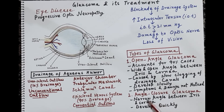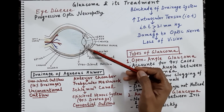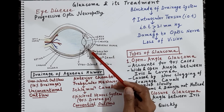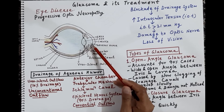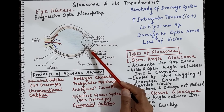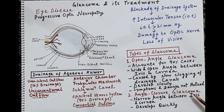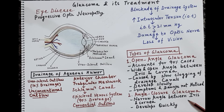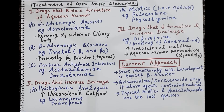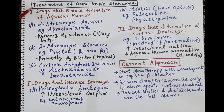The second type is angle closure glaucoma. Here, the angle between the iris and the cornea is very narrow — so narrow that there is hardly any space for the flow of aqueous humor into the drainage system. This passage itself is blocked due to the very narrow angle, making drainage very poor. Angle closure glaucoma develops quickly and symptoms and damage are visible quite early.